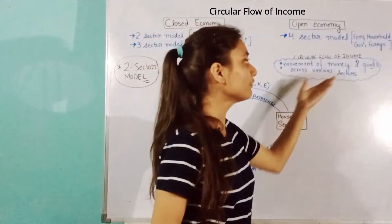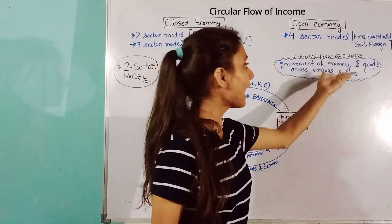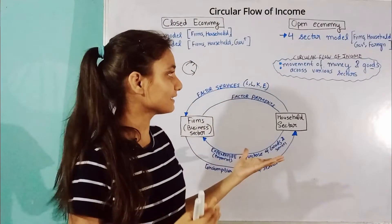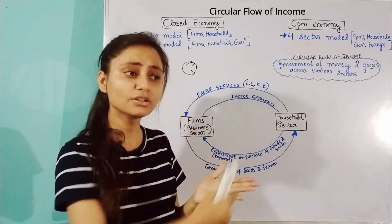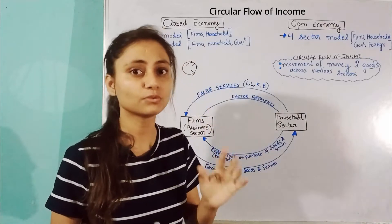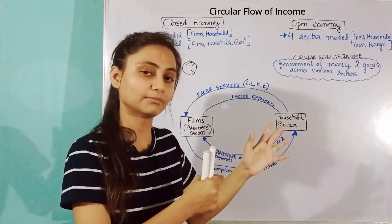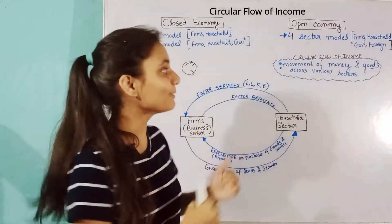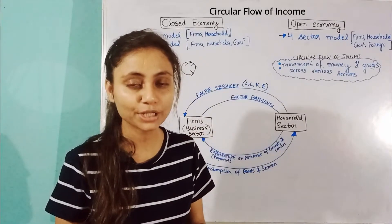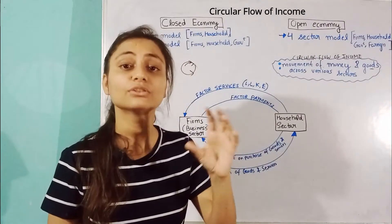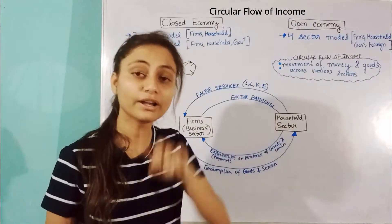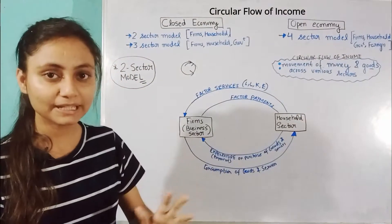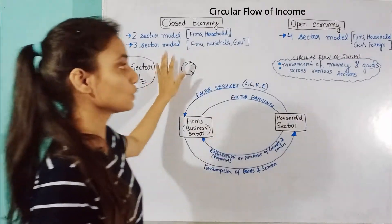Circular flow of income means the movement of money and goods across various sectors of an economy. Money, goods, and services circulate in our economy, and when it happens in a loop, we call it circular flow of income. This movement happens naturally, and we learn about it. In any economy, if there is a generation of income, that income will move in a circle. First we learn the circular flow in a closed economy.